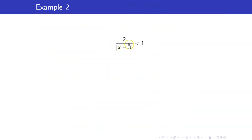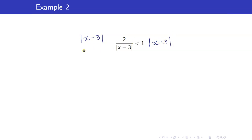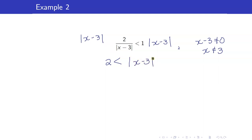For the next example: 2 over the absolute value of x minus 3 is less than 1. This is a case where we have a variable in the denominator with an inequality. Since the absolute value of a number is always greater than or equal to 0, I can multiply both sides by the absolute value of x minus 3 — because this is positive — with the assumption that x minus 3 is not equal to 0. This simplifies to 2 is less than the absolute value of x minus 3.